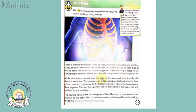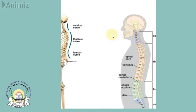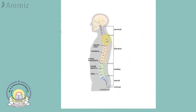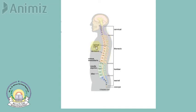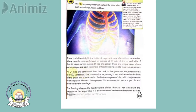All 24 ribs are connected from the back to the spine and are joined by the thoracic vertebrae. We discussed thoracic vertebrae in the previous lecture. Thoracic vertebrae are found below the cervical vertebrae in the spine and consist of 12 bones. The rib cage is present in the front part, so the spine is at the back and the ribs are in front of the thoracic vertebrae.